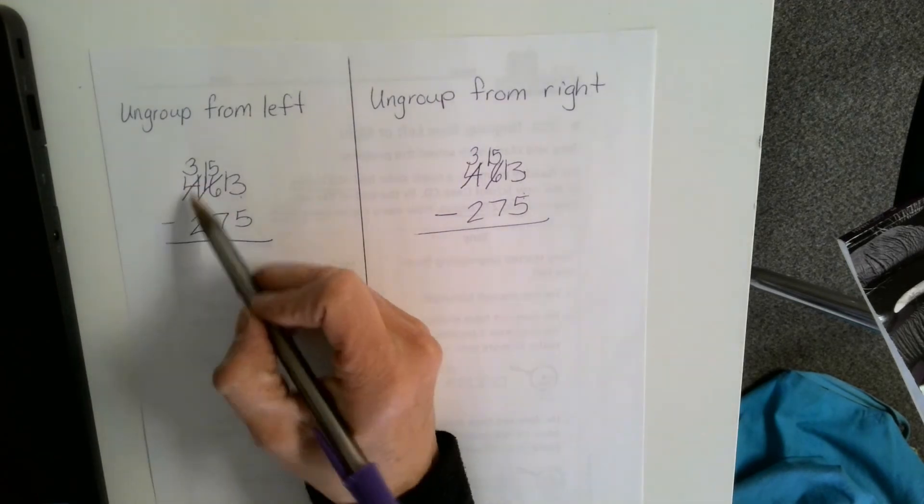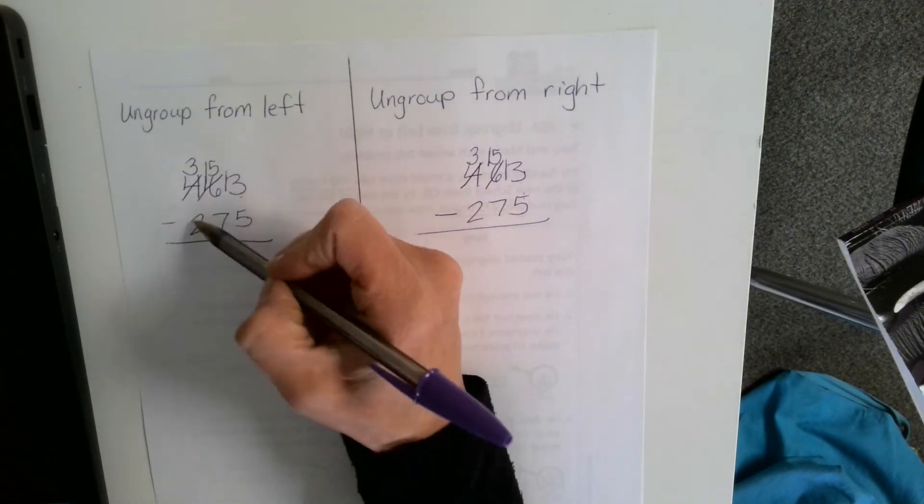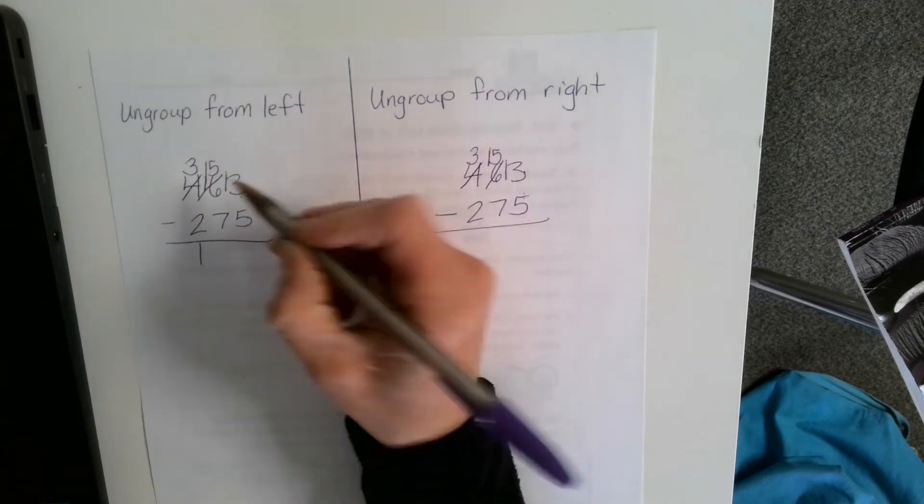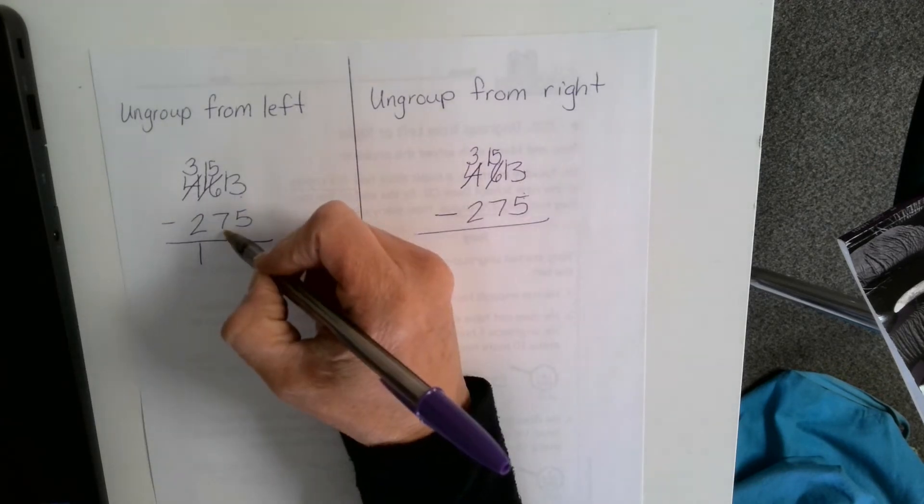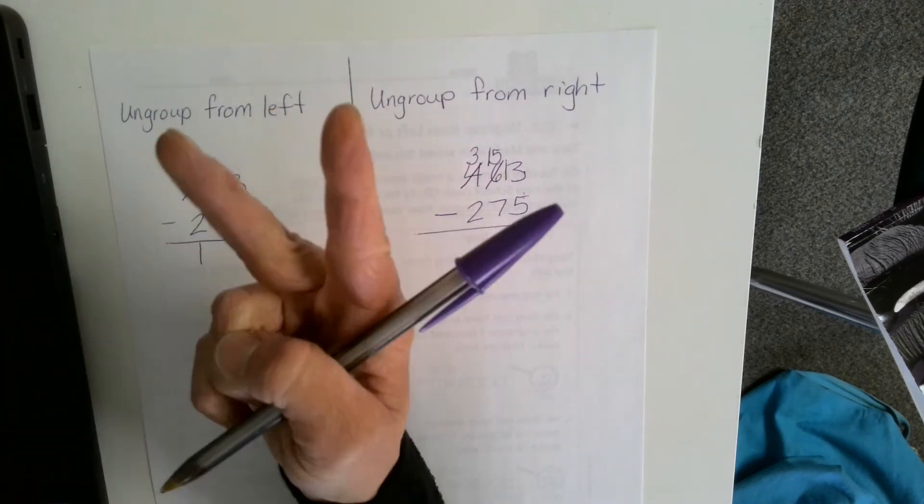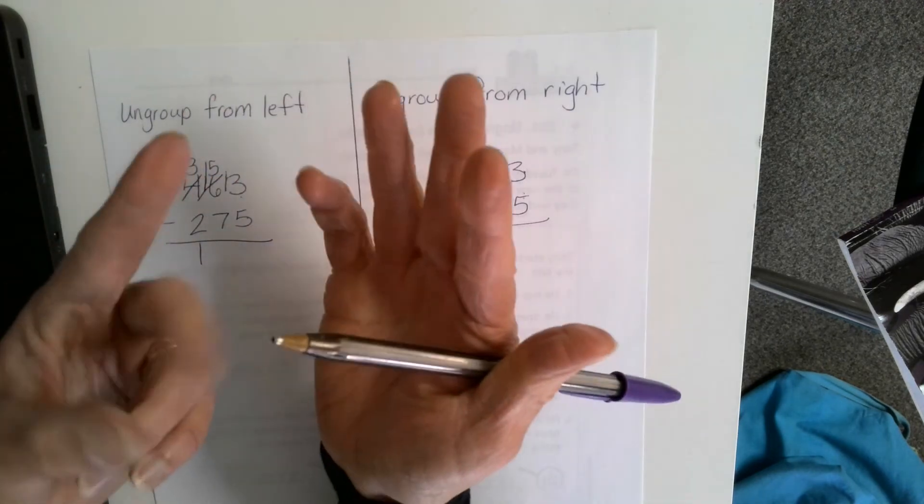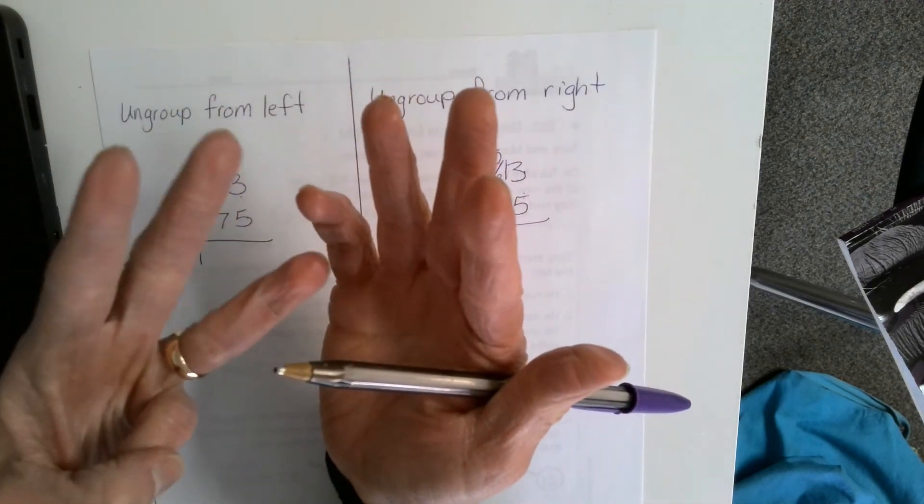The neat thing about this method is you ungroup first and then you can subtract in any direction. I could start in the hundreds place. 3 minus 2 is 1. 15 minus 7. Count up from 7 to 15. 7 in my head. 8, 9, 10, 11, 12, 13, 14, 15. I see 8.